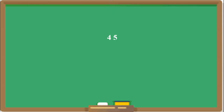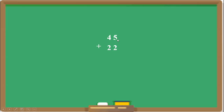We will see here one example. Let's consider we want to add 45 and 22. These 45 and 22 are both two-digit numbers. While writing these numbers vertically — vertically means standing — we need to take care of the place value of each digit.